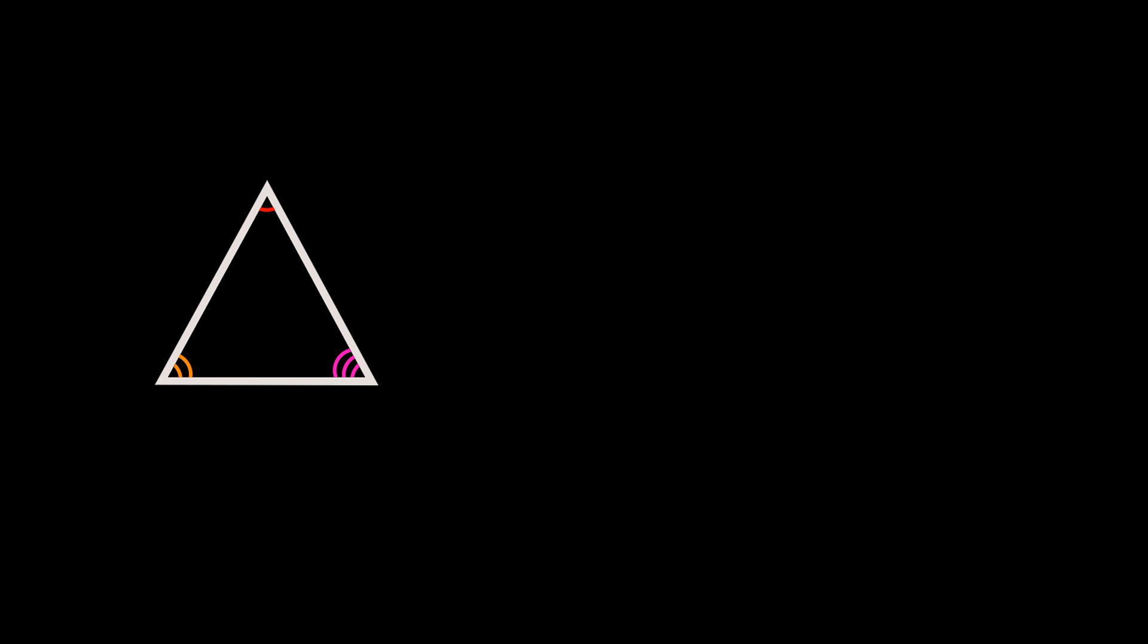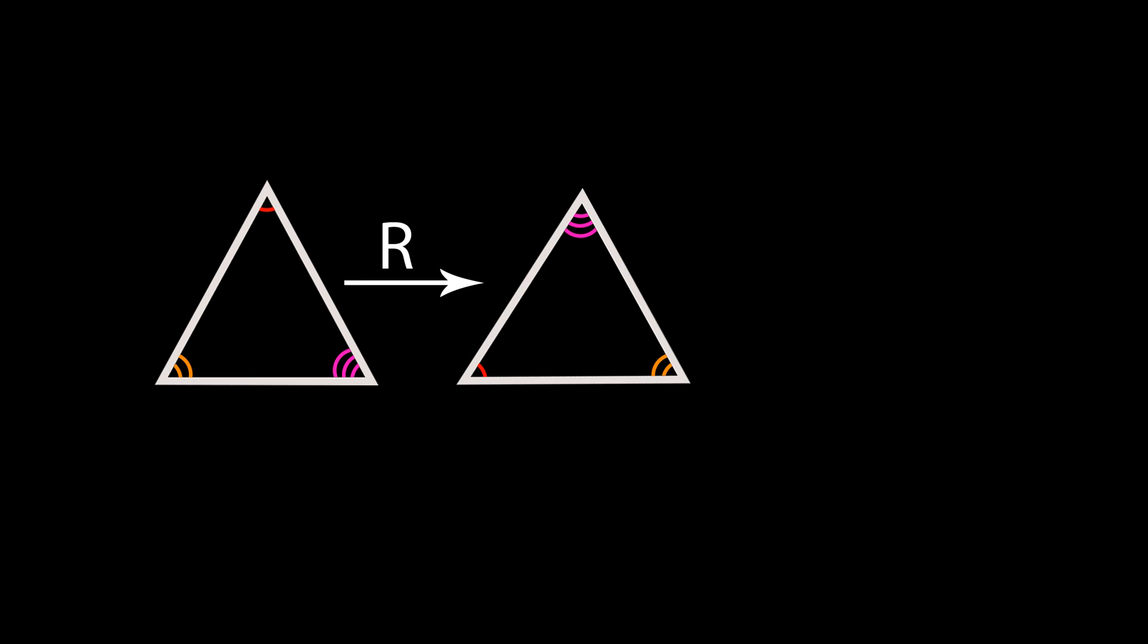We could imagine taking a triangle, and first rotating it 120 degrees. This would be the R transformation. Then we could say, rotate it by 240 degrees. The Q transformation. What exactly have we done here? Well, we can see that the shape we're left with is exactly the same as the one we started with. In other words, we've left the shape unchanged. So applying R, and then Q, is the same as applying the identity transformation.